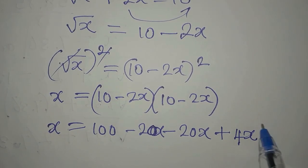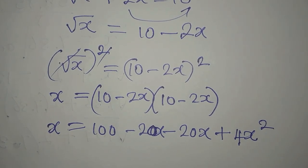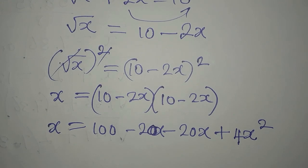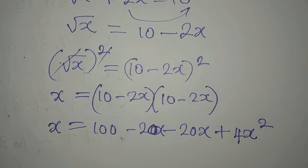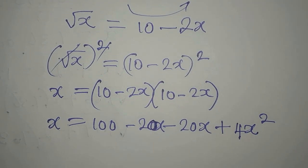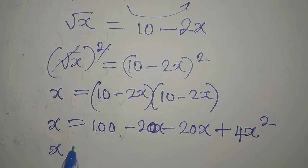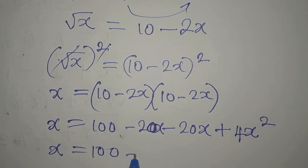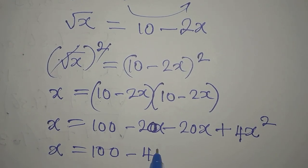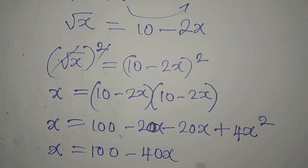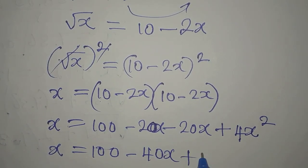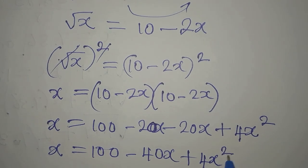We get 4x squared. So continuing from here, we have x equals 100 minus 40x plus 4x squared, because minus 20x minus 20x gives minus 40x.